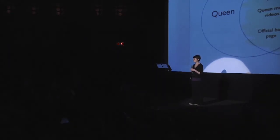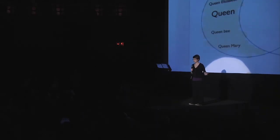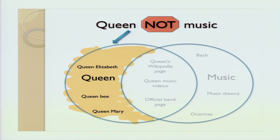The next Boolean operator is NOT. Let's say you have terrible taste in music and you're not interested in the band Queen. Queen NOT music will cut out everything that has to do with music, whether it mentions Queen or not. So you're left only with Queen Elizabeth, Queen Mary, Queen size beds, and so on. In Google, the minus sign is used rather than NOT. But if you're in a database, you'll have to type out the word NOT.